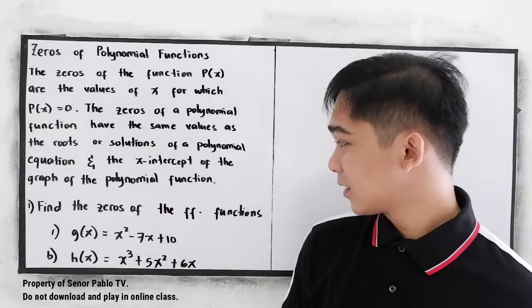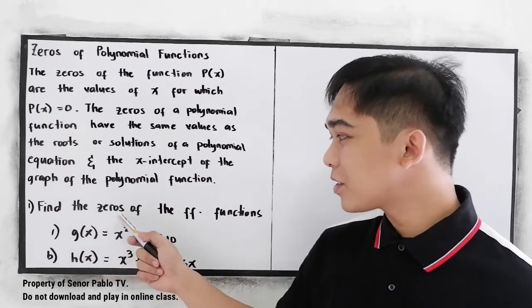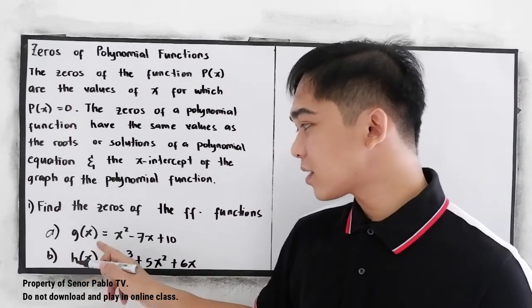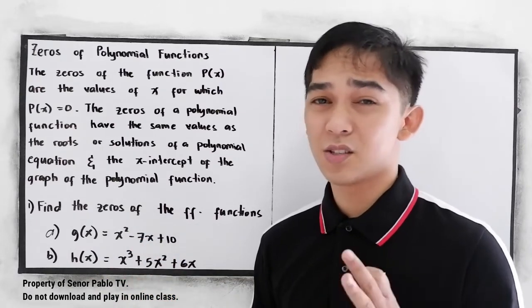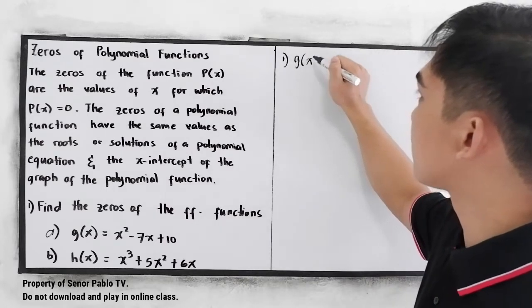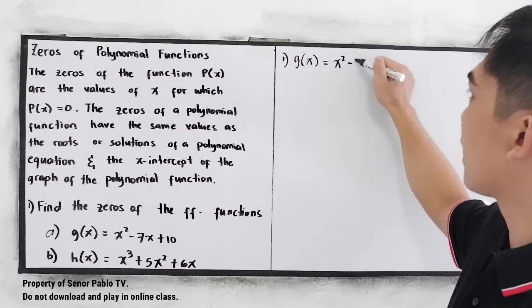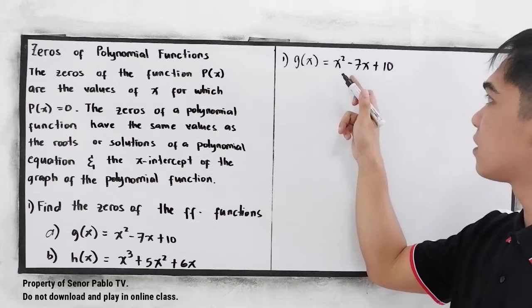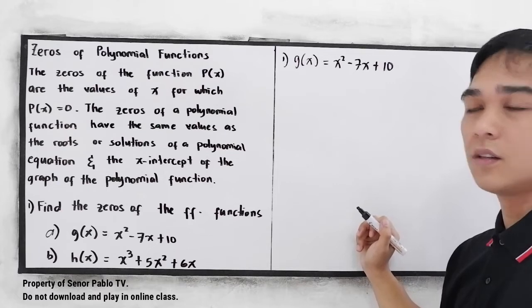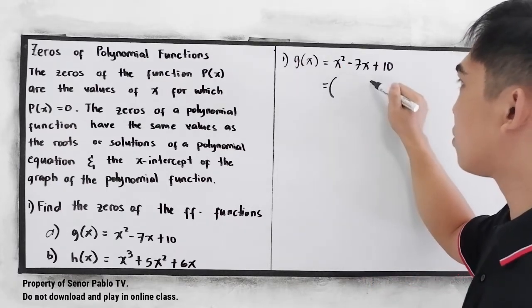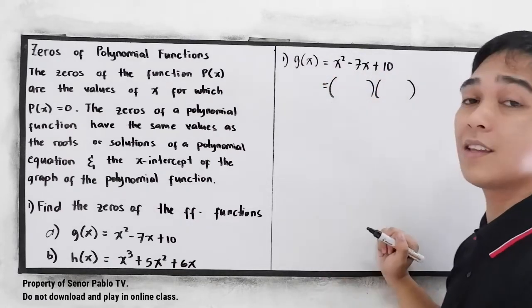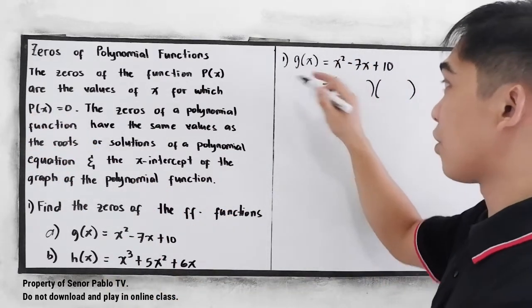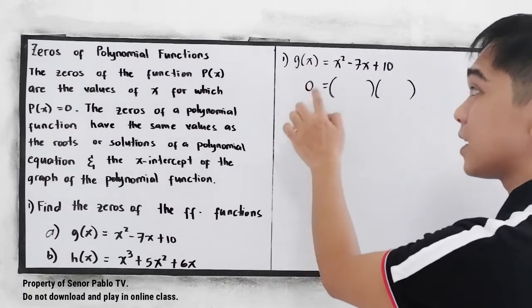Let's have the following exercises. Number 1: find the zeros of the following functions. Letter A: g of x is equal to x squared minus 7x plus 10. Letter A is a quadratic function — we have a degree of 2. Therefore, we need to factor out the given, then get the value of x. So we need that p of x is equal to 0, so we can set g of x equal to 0.